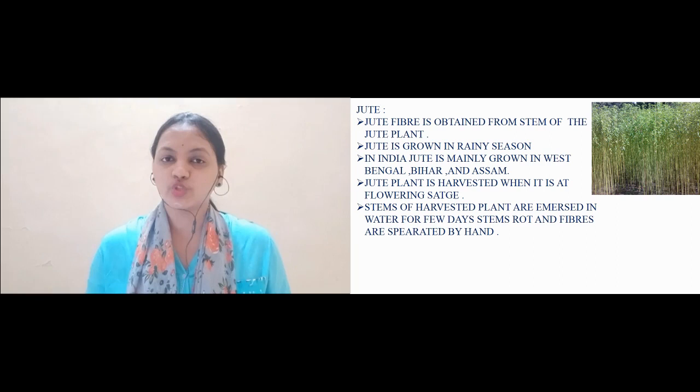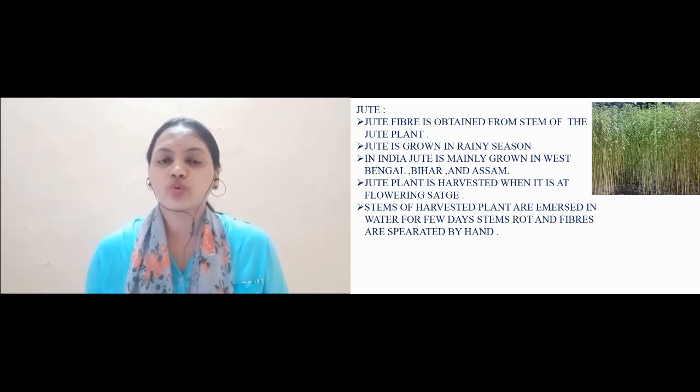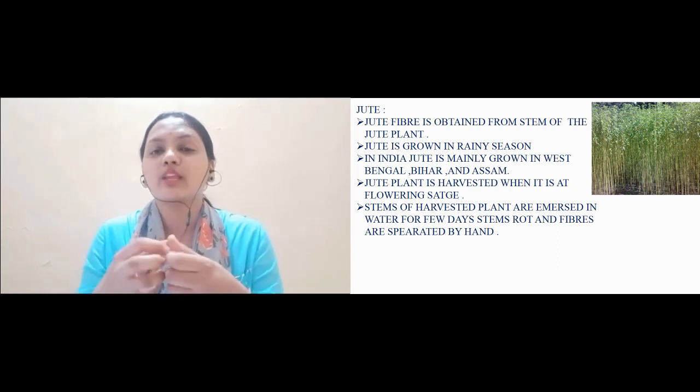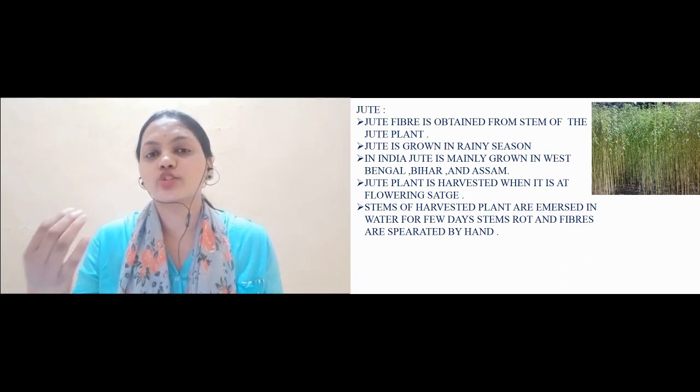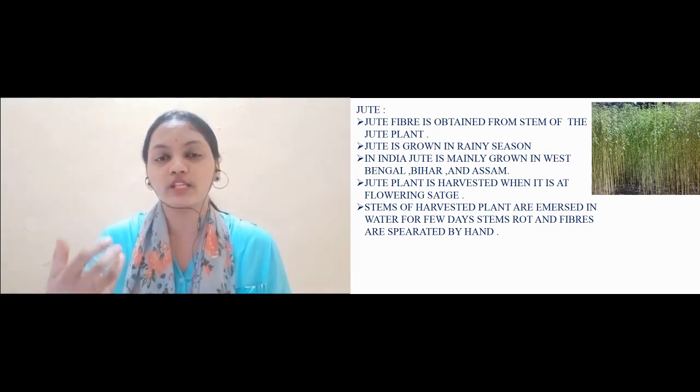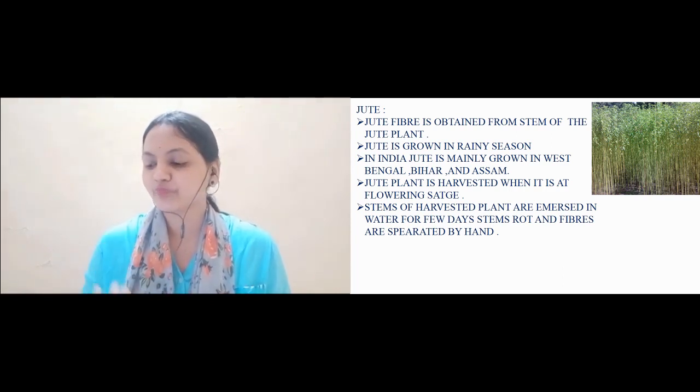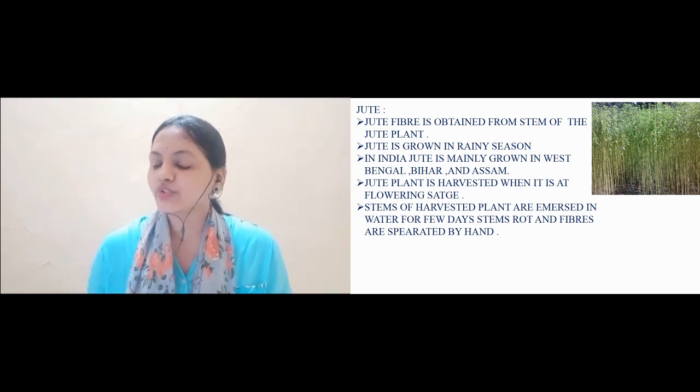After soaking these jute stems for few days, they start to rot. The jute stems are soaked in water and they start to rot. These rotten jute stems now can be easily separated by hand, and the jute yarn is produced with the help of these rotten jute stems.